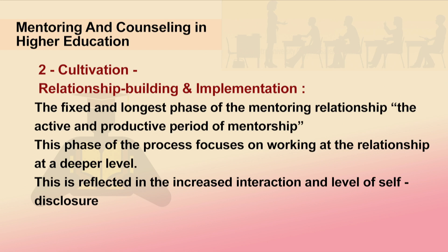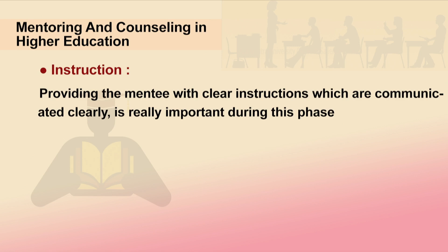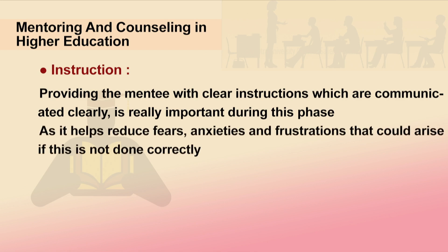The fixed and longest phase of the mentoring relationship — the active and productive period — is called Cultivation. This phase of the process focuses on working at the relationship at a deeper level, reflected in increased interaction and the level of self-disclosure. What the mentee can expect during this phase: instruction. Providing the mentee with clear instructions is really important during this phase, as it helps reduce fear, anxiety, and frustration that could arise if this is not done correctly.